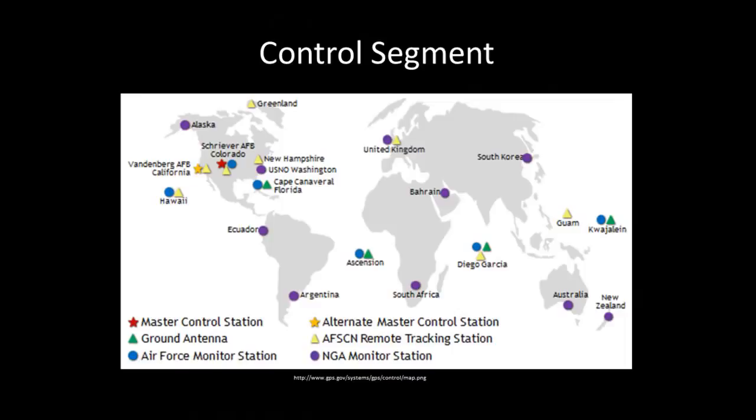The GPS control segment consists of a global network of ground facilities that track the GPS satellites, monitor their transmissions, perform analysis, and send commands and data to the constellation.